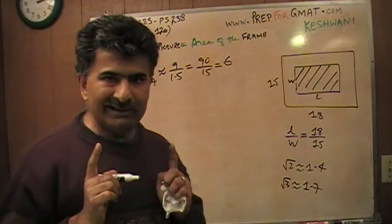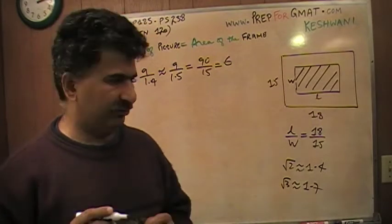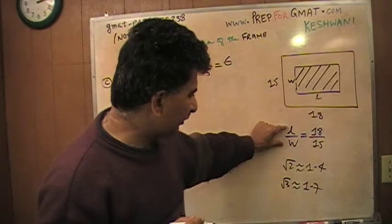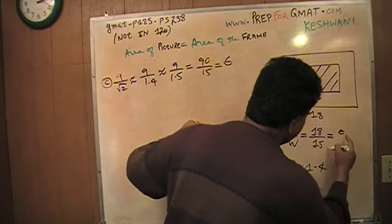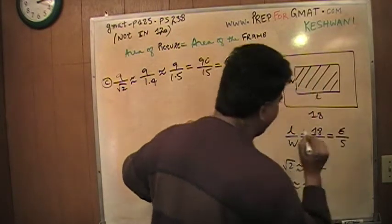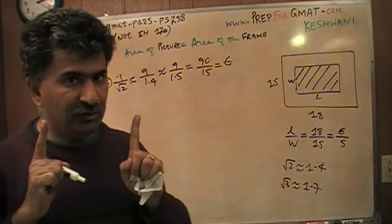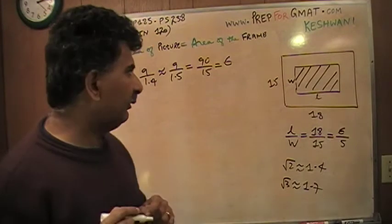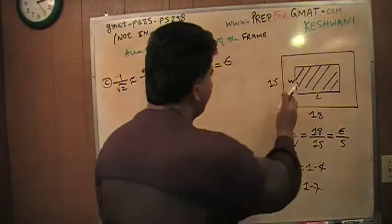So answer choice C says that the length of the picture is 6. And since they are the same ratio, if the length is 6, the width has to be 5. If answer choice C is the correct answer, let's see what happens in that case.